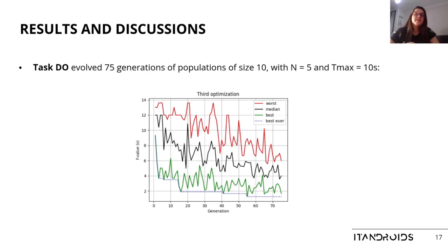Task dynamic opponents evolved 75 generations of populations of size 10, with N equals 5 and T max equals 10 seconds. The best ever fitness value was around 1.26 seconds, a longer time interval than the last task, which we also expected given the increased task difficulty.